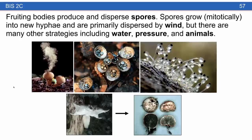Fruiting bodies produce and disperse spores. Spores grow mitotically into new hyphae and can be dispersed by wind, water, pressure, or animals. Examples include: a puffball showing wind-dispersed spores, bird's nest fungi as water-dispersed spores, cannonball fungi that disperse spores by pressure, and subterranean fungi like this California truffle dispersed by flying squirrels.